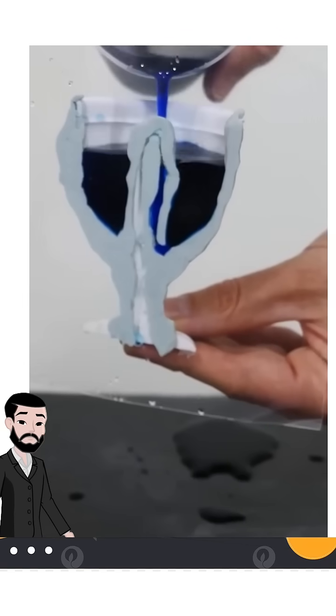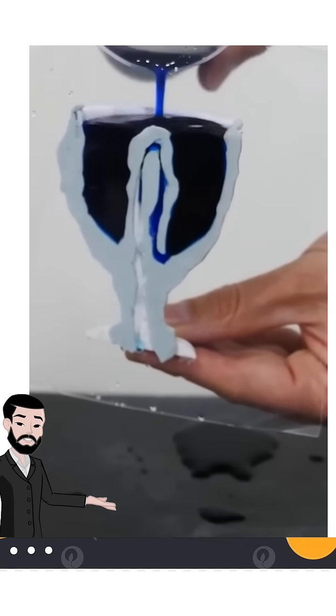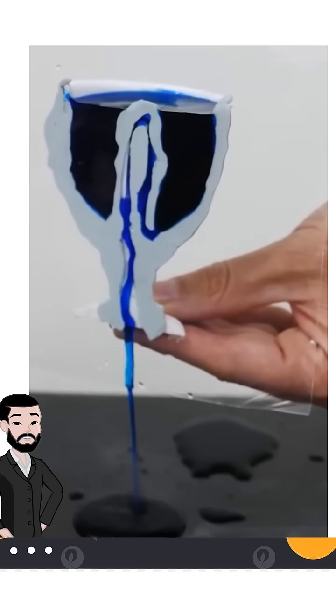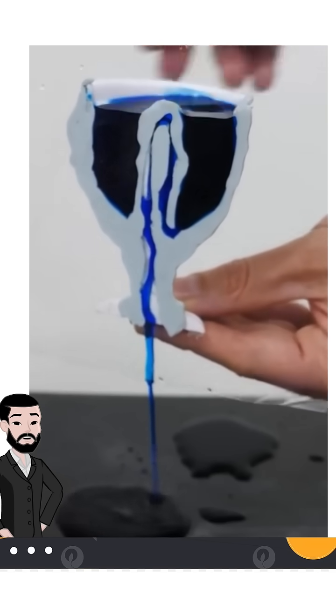Here's how it works. A normal Pythagoras Cup has a visible center tube that uses the siphon effect. When you fill the cup below the tube's top, it works like any other cup.